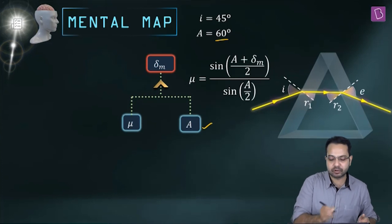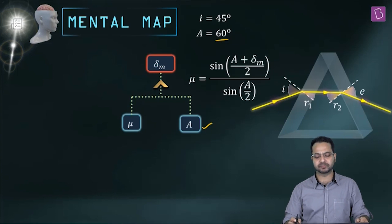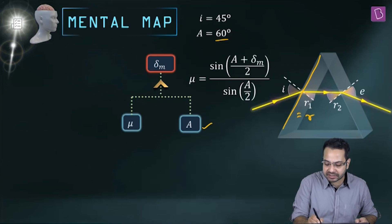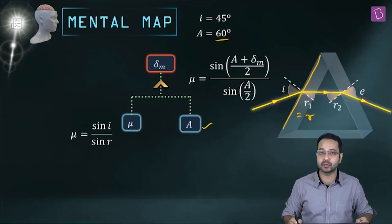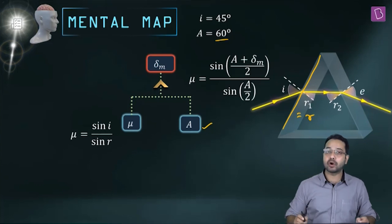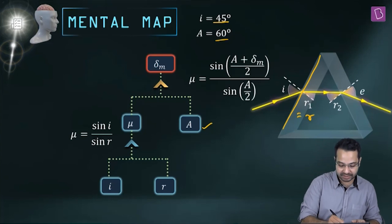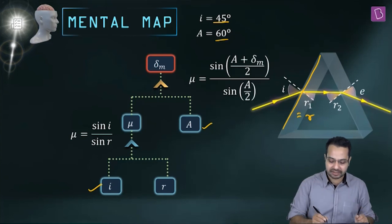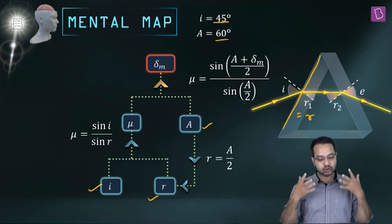A is something we know — it is given. We don't know μ, so let's try to find a relationship for μ. Refraction is happening at this boundary, so I can write Snell's law. r1 = r = A/2, so I can say sin(i)/sin(r) = μ. To find μ I need i and r. i has been given. r = A/2 = 30 degrees, so I know r as well.